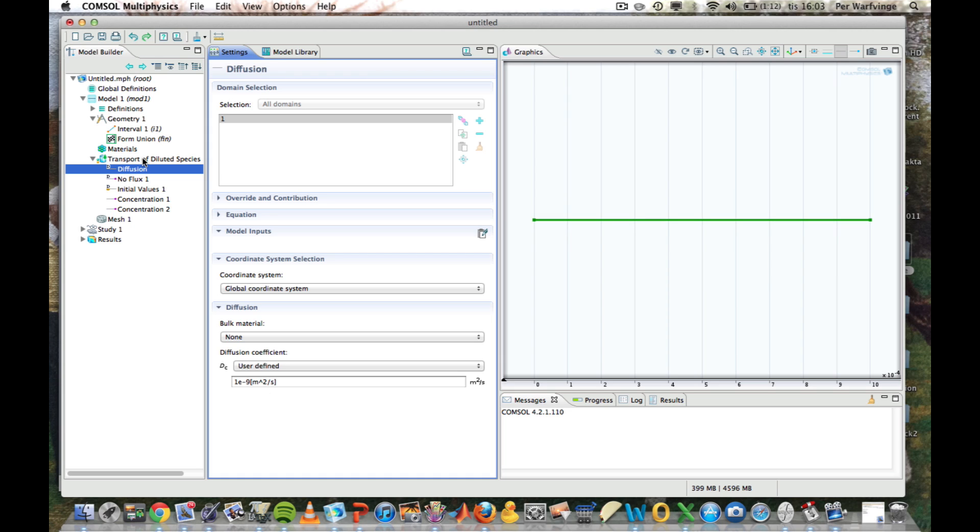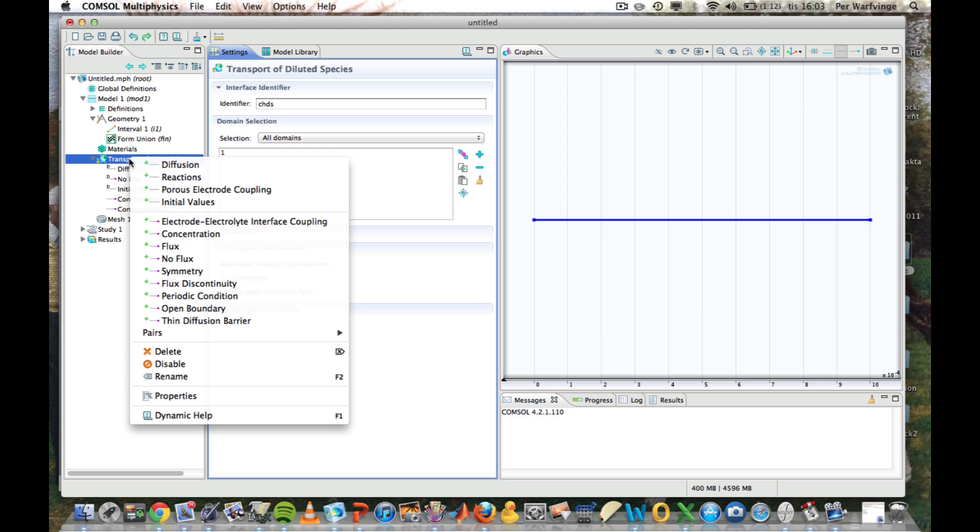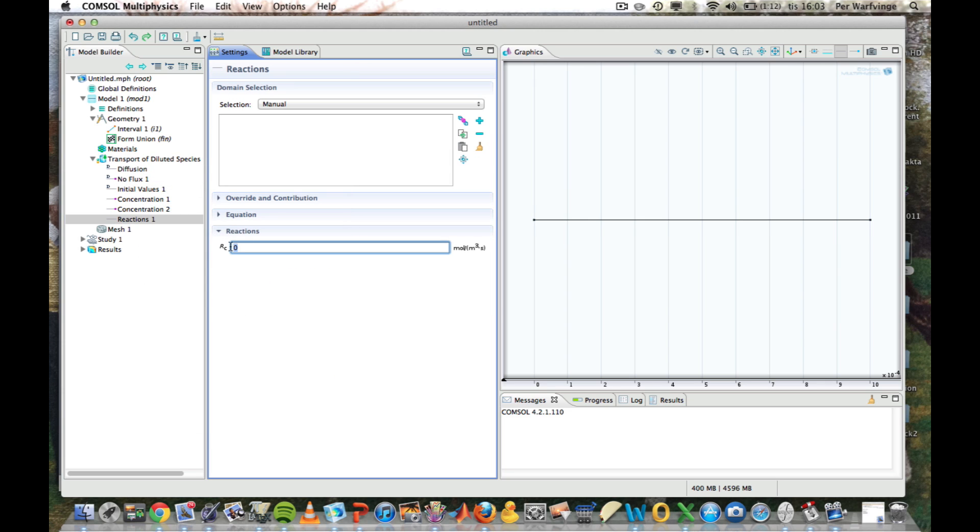Now it's time to do the final thing, and that is to introduce the chemical reaction. So we right-click, get a reaction, and just define it to minus 0.01 C squared. Maybe there should be a multiplier as well. And that reaction takes place in the whole domain.